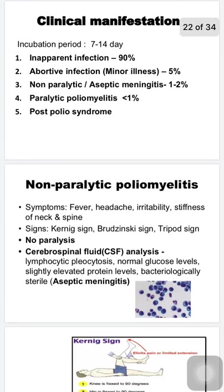Looking at clinical manifestations: 90% of patients are asymptomatic or have an inapparent infection. About 5% suffer from abortive or minor illness with simple headaches, sore throat, nausea, and anorexia. One to two percent suffer from non-paralytic poliomyelitis, which is aseptic meningitis or encephalitis. Less than 1% develop paralytic poliomyelitis. There is also a clinical syndrome known as post-polio syndrome.